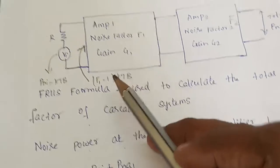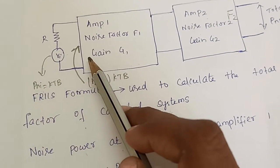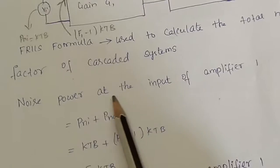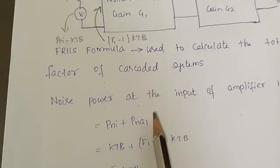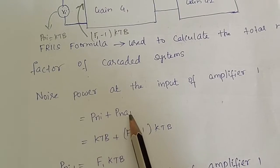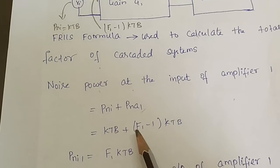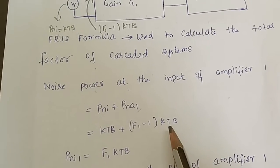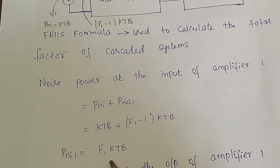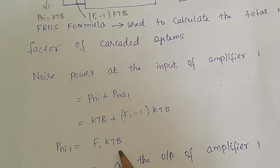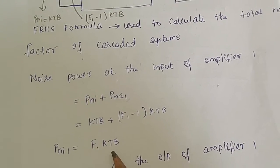The total noise available at the input of Amplifier 1 is PnI plus PnA1. PnI is KTB and PnA1 is (F1 - 1)·KTB. If we simplify this, KTB cancels and the total noise power at the input of Amplifier 1 becomes F1·KTB.